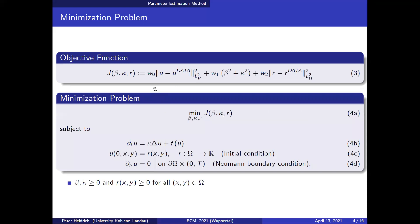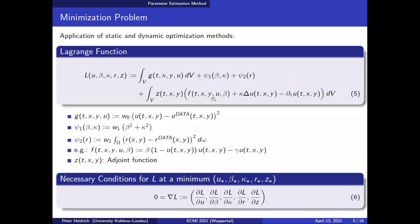This would be the minimization problem: we want to minimize this objective function subject to our PDE system, and to keep it biologically useful the parameters should be non-negative and the initial condition should also be non-negative. We use a combination of static and dynamic optimization.